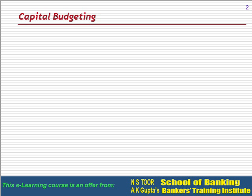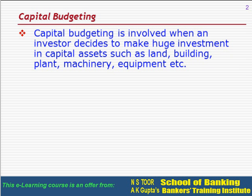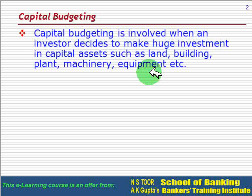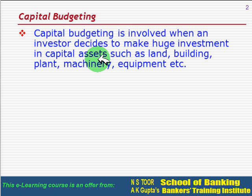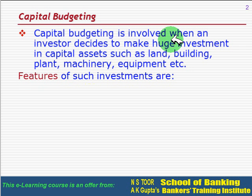In this session we are going to discuss capital budgeting. Capital budgeting is involved when investors decide to make huge investments. This investment is in capital assets that includes land, building, plant, machinery, equipment, etc. Whenever huge investment is required to be made in capital assets, then capital budgeting is involved.